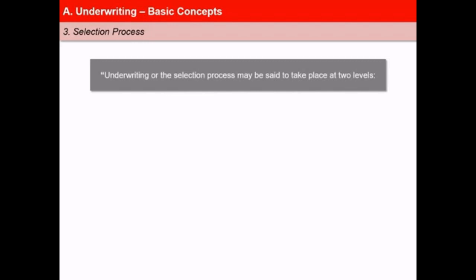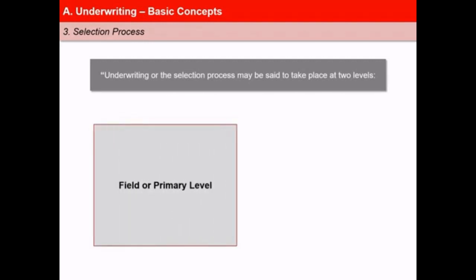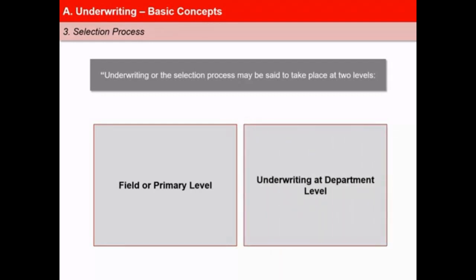Underwriting or the selection process takes place at two levels. First is at field level, also known as primary underwriting. It includes information gathering by an agent or company representative to decide whether an applicant is suitable for granting insurance coverage or not. The agent plays a critical role as primary underwriter, as he is in the best position to know the life to be insured. Second is at underwriting department level, where specialists and proficient persons consider all relevant data and decide whether to accept a proposal for life insurance and on what terms.